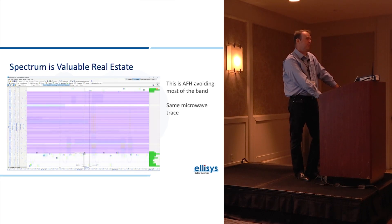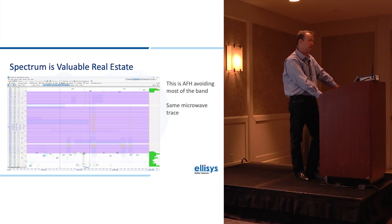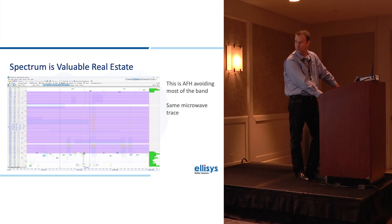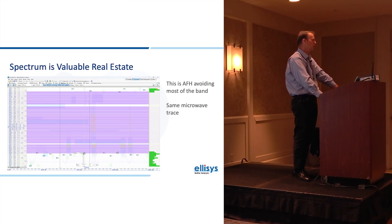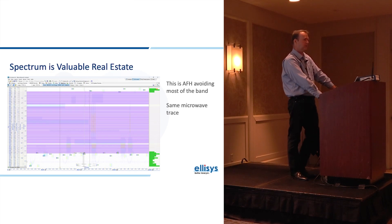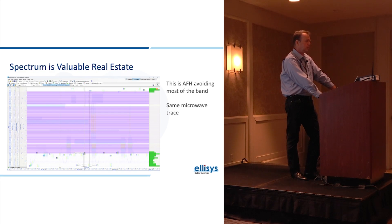That's the avoidance right there — see the purple bars? That's our software telling the user that we're not using those channels, at least in this Piconet over that period of time, because that microwave is killing us. We're just shut off. The BR-EDR minimum is like 20 channels, and that's what it's using here.